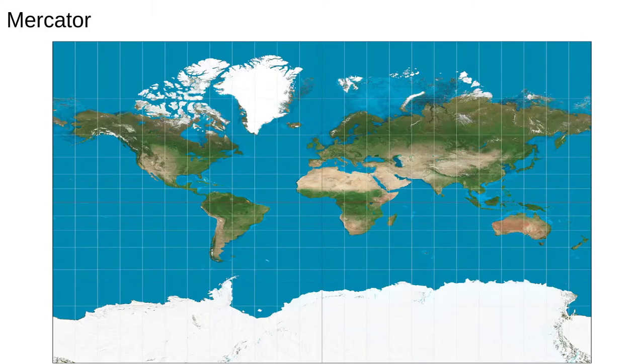A map projection is a transformation of latitude and longitude from a globe to a plane. All projections distort the globe in some way, so generally the best choice will depend on the application.